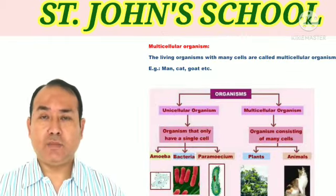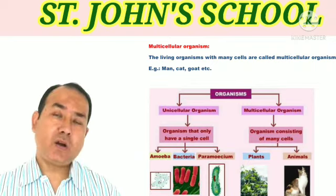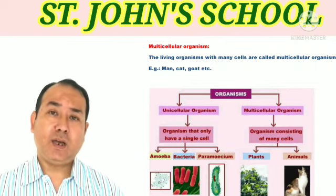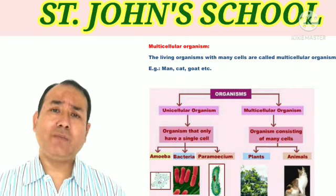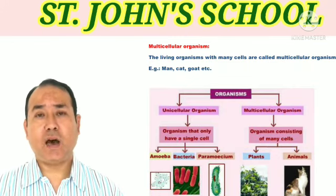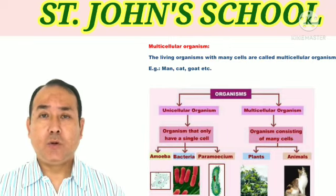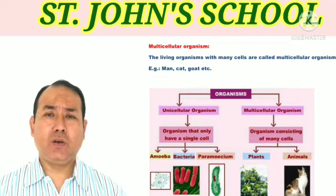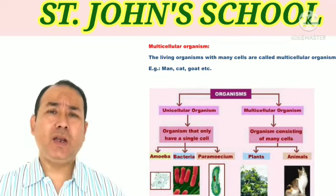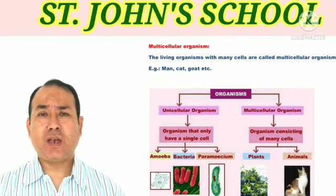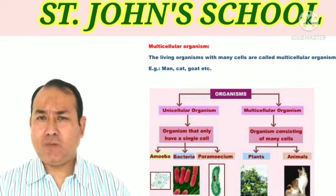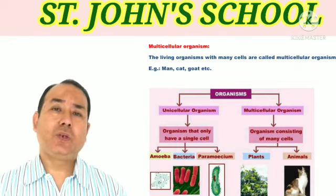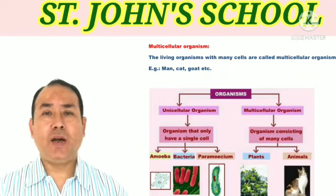Next come multicellular organisms. How do we define multicellular organisms? They are organisms with many cells. We human beings have millions and millions of cells in our body. Goat, cat, and dog are all animals which have millions and millions of cells. Their cells are so microscopic that they cannot be seen with our naked eyes. Such organisms are called multicellular organisms.